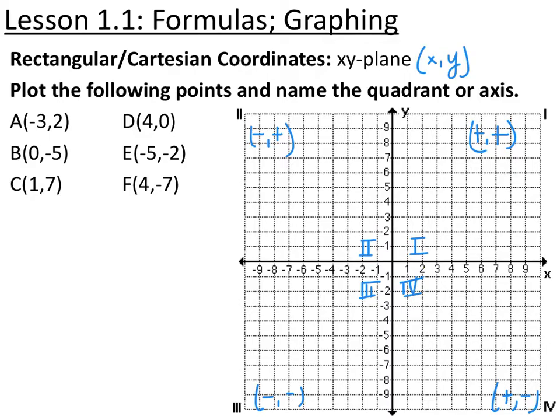So here's six points. Go ahead and plot these six points, and then label the quadrant or the axis that those points lie on.